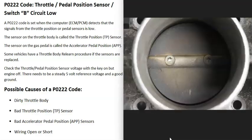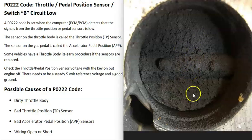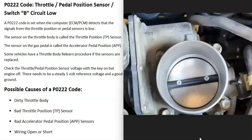The first possible cause of a P0222 code is a dirty throttle body. These butterfly plates inside can get really dirty, and when they do it can throw off those sensors and cause the vehicle to run badly. So look inside the throttle body and make sure it's not super dirty. If it is, you can get throttle body air intake cleaner and spray it in there to clean it up — you can even use a small toothbrush.